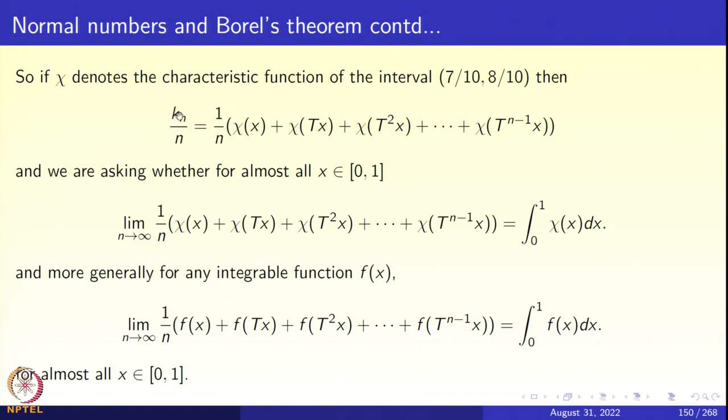Our kₙ/n, the number of times the digit 7 appears in the first n strings, is simply the arithmetic mean of the characteristic function evaluated at x plus the characteristic function evaluated at Tx plus the characteristic function evaluated at T^(n-1)x, where χ is the characteristic function of this interval [7/10, 8/10]. This open interval is the interval I and I have taken the characteristic function of that interval. We are asking the question whether this limit 1/n times [χ(x) + ... + χ(T^(n-1)x)] is going to be equal to 1/10. But 1/10 is the integral from 0 to 1 χ(x)dx. This is the equation that we are looking for and the question is whether this equation is valid for almost all x in the interval [0,1].